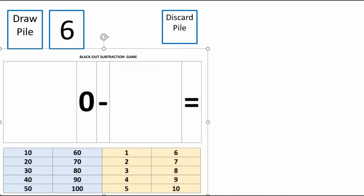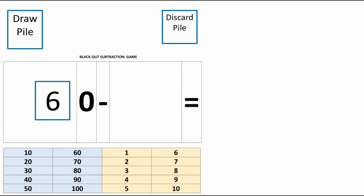The way this game works is that when it's my turn, I draw one card from the draw pile. In this case, I drew a six. That card automatically goes in the tens place, in front of the zero, to the left of the zero. So now I know that I'm starting off my subtraction problem with 60.